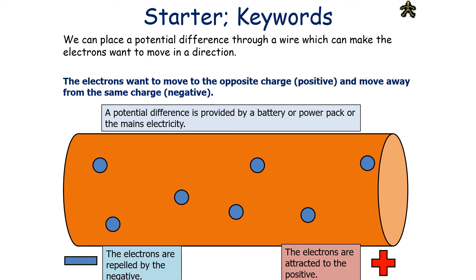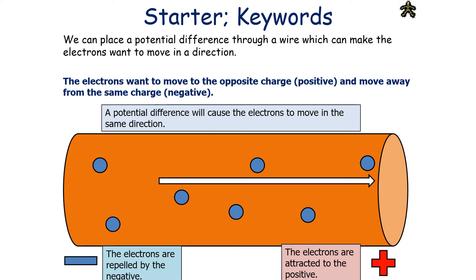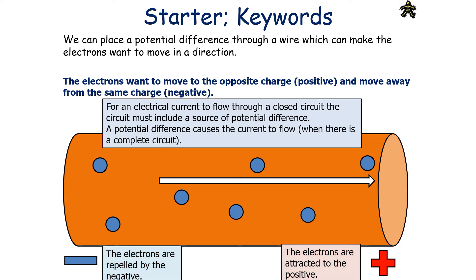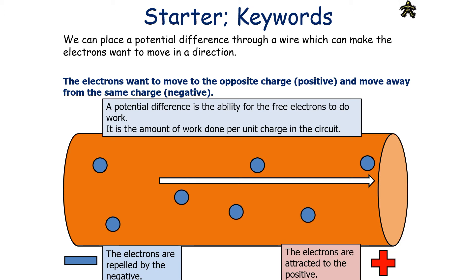We can place a potential difference through a wire which can make the electrons want to move in a particular direction. A potential difference can be provided by a battery, a power pack, or the mains supply. A potential difference is placing a positive charge at one end of the conductor and a negative charge at the other end. The electrons will want to move to the opposite charge, which is positive, and move away from the same charge, which is negative. So a potential difference will cause the electrons to move in the same direction. For an electrical current to flow through a closed circuit, the circuit must include a source of potential difference. The potential difference is the ability for the free electrons to do work, which is when those charges move in a circuit.